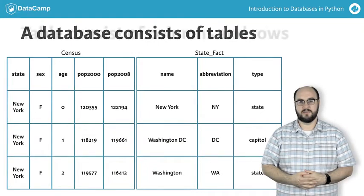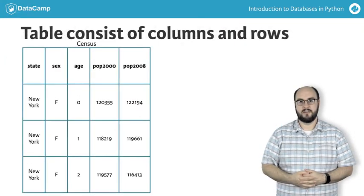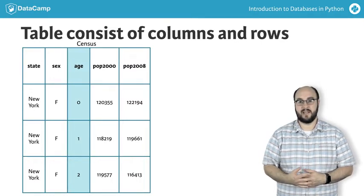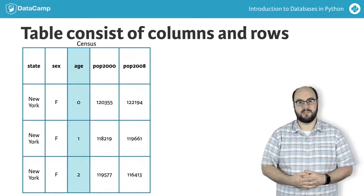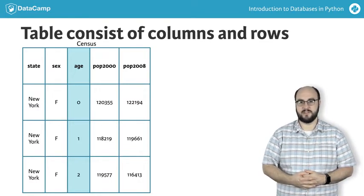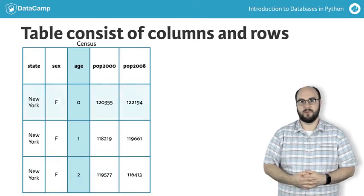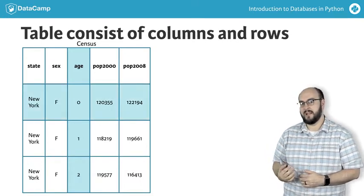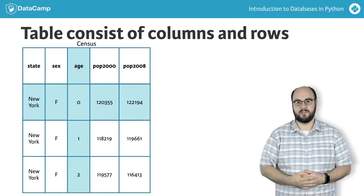Tables themselves consist of columns and rows. The columns of a database define the name of an element or field in our data, such as the age column highlighted here. They also specify the data type, such as a string or an integer, which we'll talk more about in a later section. All of the data in a table is stored within the rows of a table. The row highlighted here contains the population counts in 2000 and 2008 for newborn females in New York State.